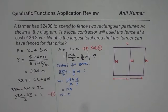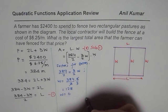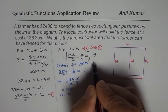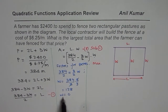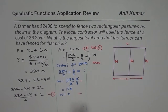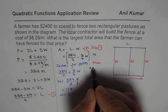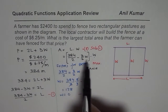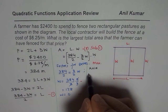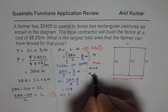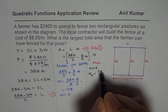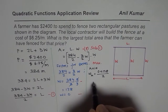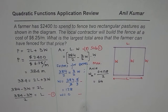So we get two widths for which the area is zero: W = 0 and W = 128. The maximum area occurs at the average of these two zeros — that is the axis of symmetry. So the optimal width is (0 + 128) / 2 = 64. When width is 64 meters, we get the maximum area.